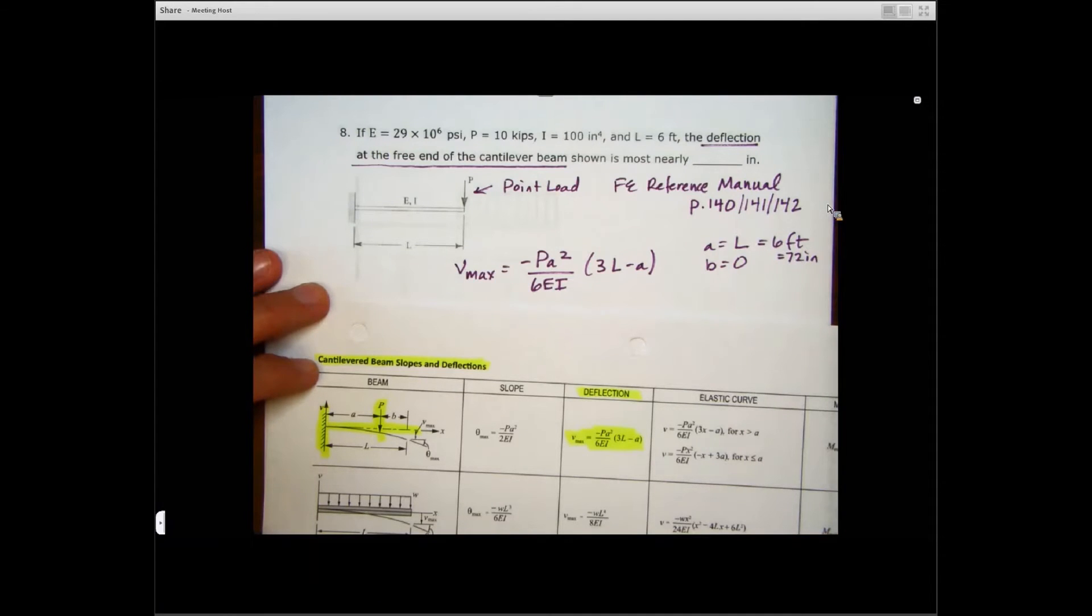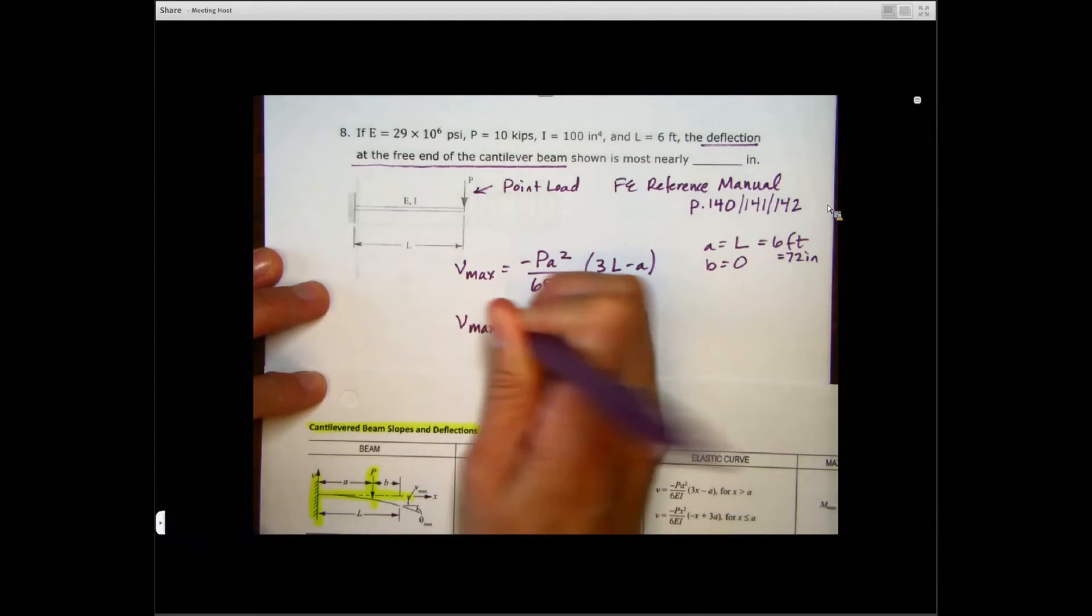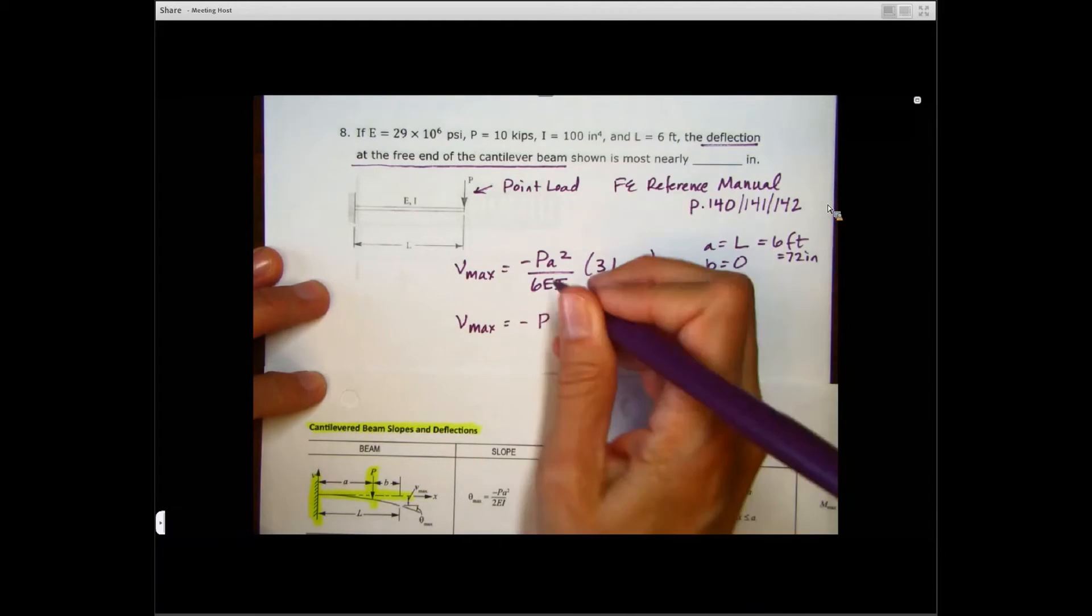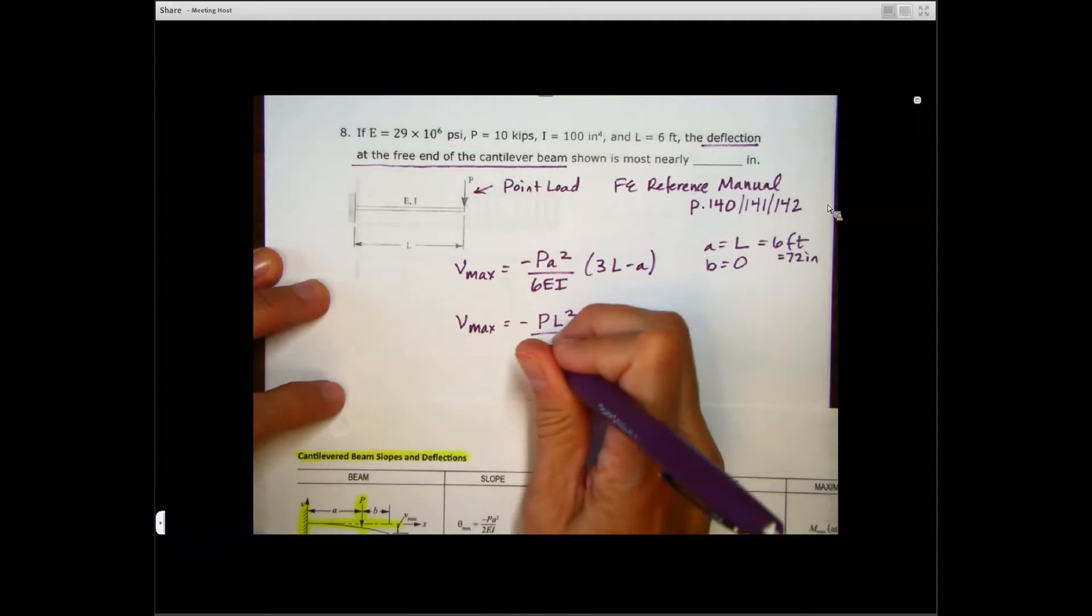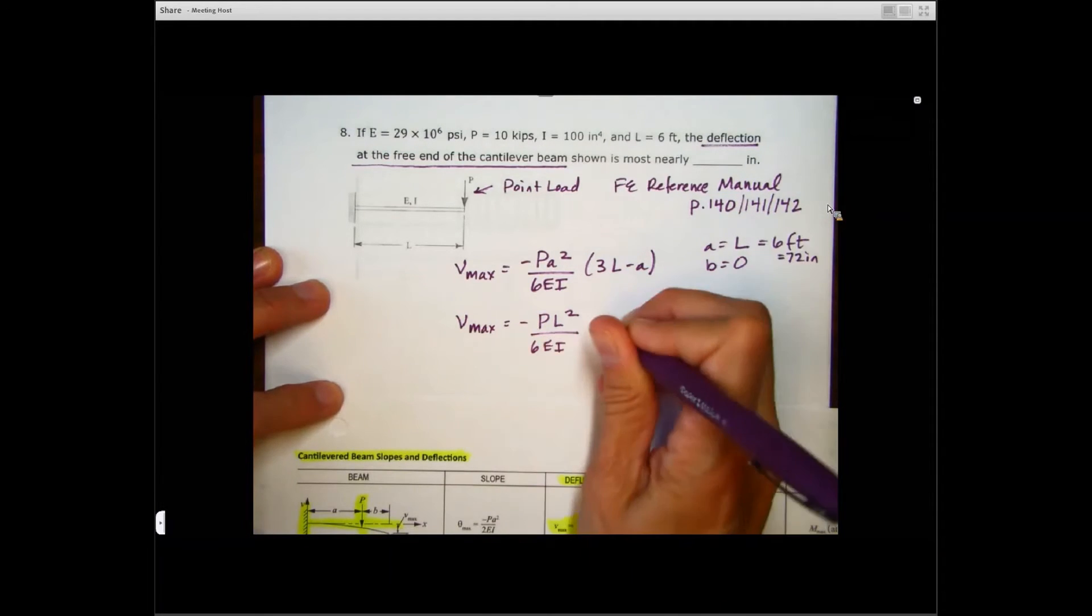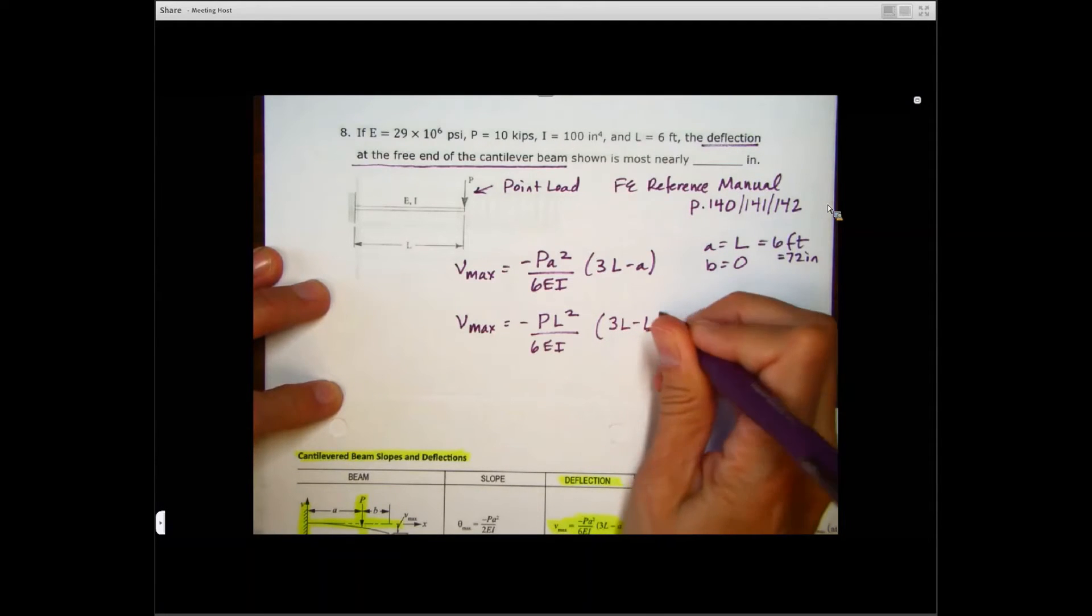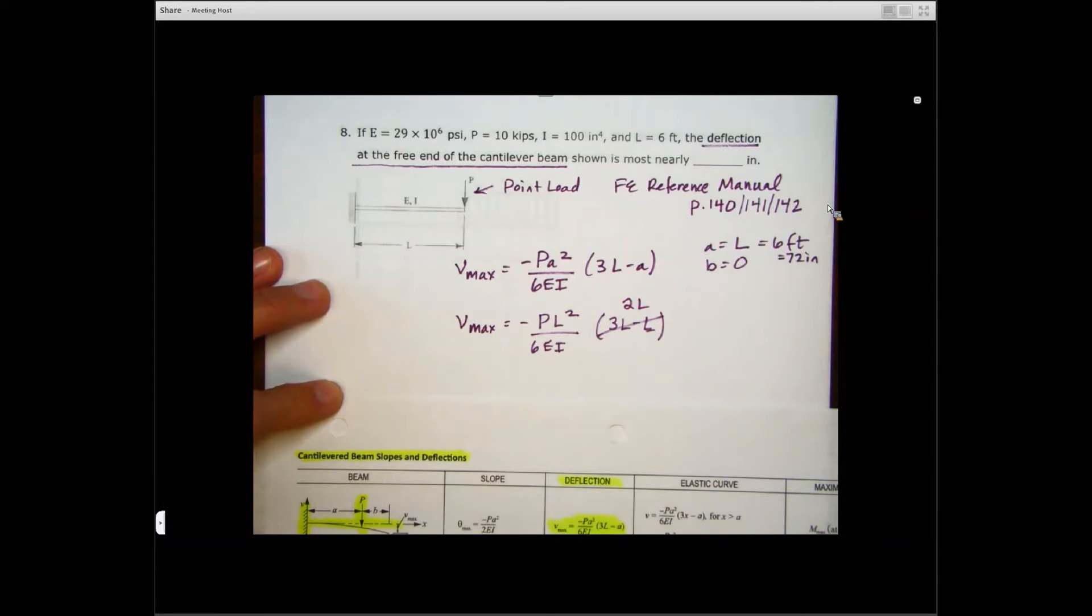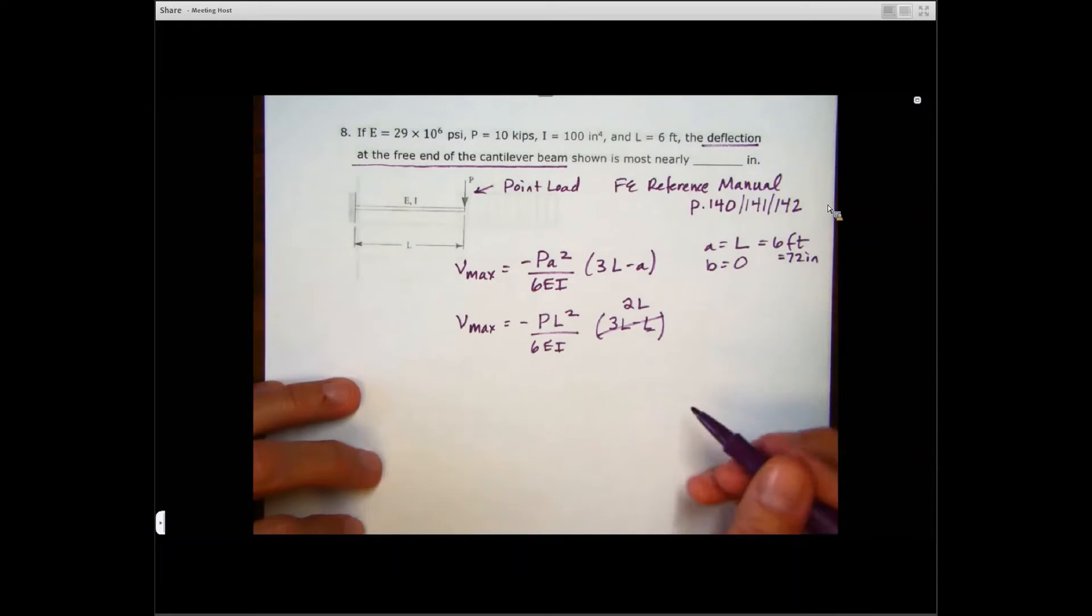And now it's just plugging our stuff in here. So for our Vmax, we're going to have minus that A is L. So it's PL squared over 6EI times 3L minus L. So that's really just 2L.